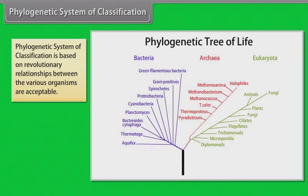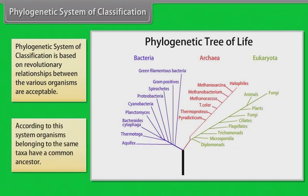Phylogenetic system of classification is based on revolutionary relationships between the various organisms. According to this system, organisms belonging to the same taxa have a common ancestor.